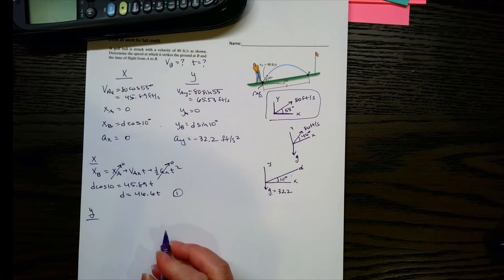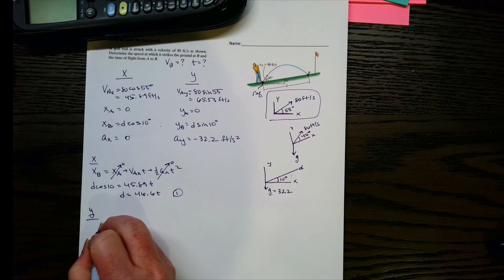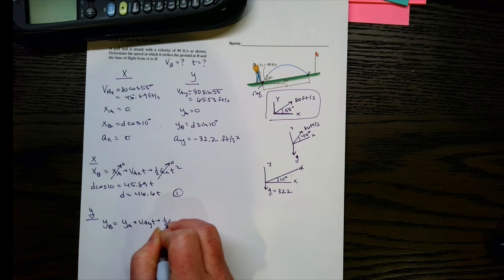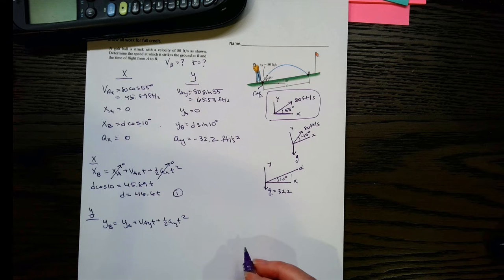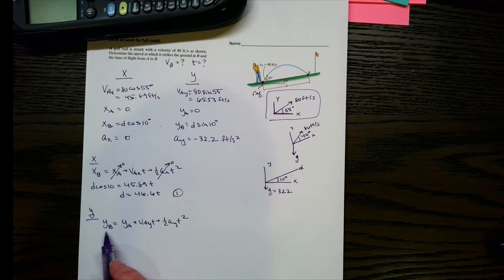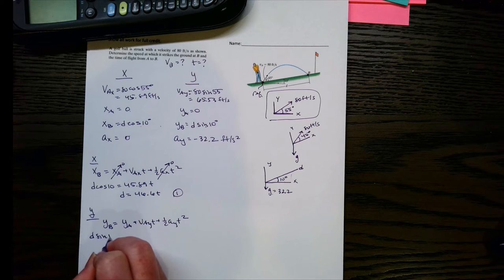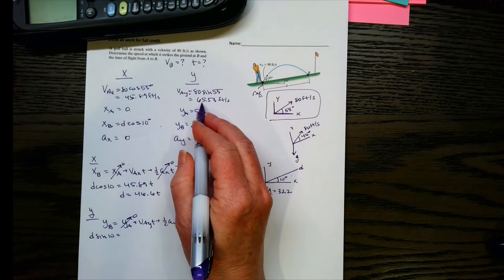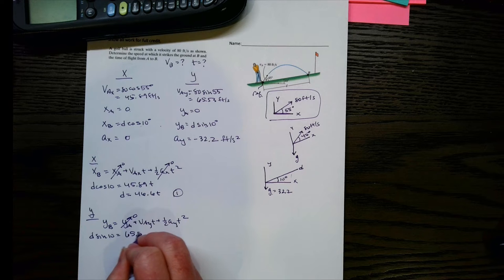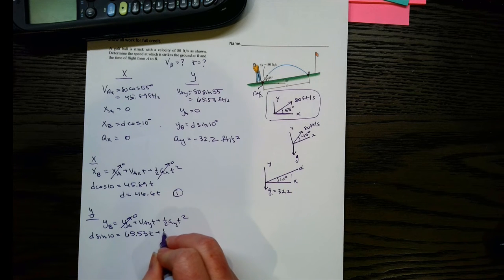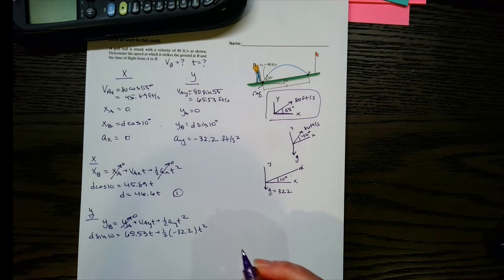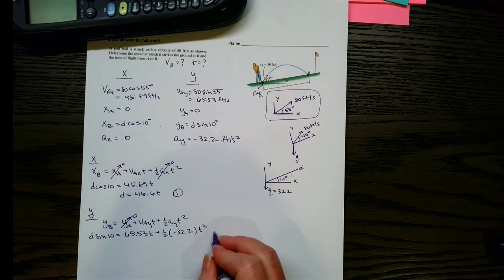So let's look at the y direction. We're going to do this similar equation. So yb equals ya plus vayt plus one half ayt squared. And let's plug everything in. So yb is going to be d sine 10, ya is 0. vay is 65.53 times t, and then we got plus one half ay, which is negative 32.2 times t squared. So let's call this equation 2.